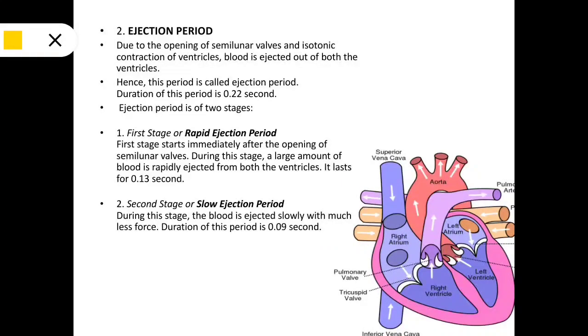The second period is the ejection period. Due to the opening of semilunar valves and isotonic contraction of ventricles, the blood is ejected out of both the ventricles. Hence, this period is called the ejection period. Duration of this period is 0.22 seconds. The ejection period is of two stages.